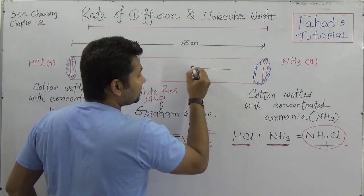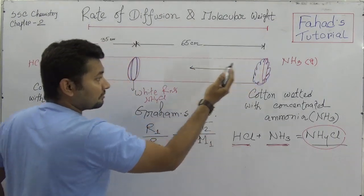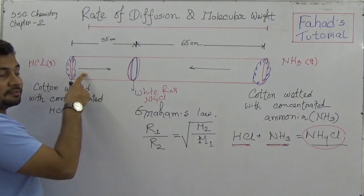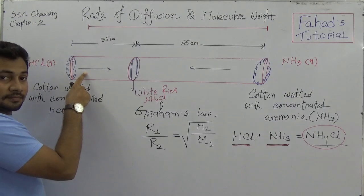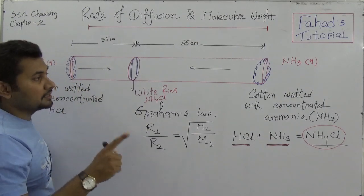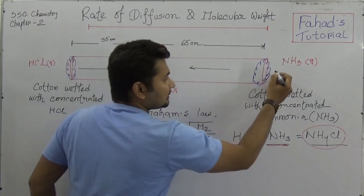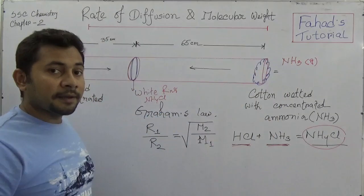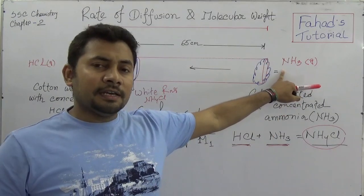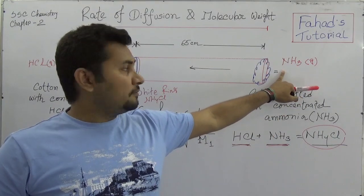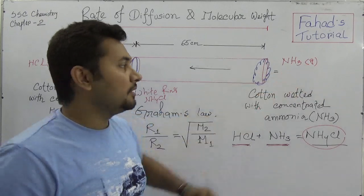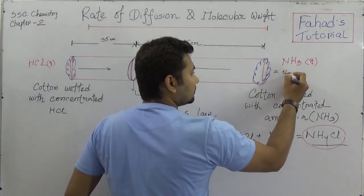What is important to notice is that the white ring forms at 65 centimeters from the ammonia end and 35 centimeters from the HCl end. The distance from ammonia is greater than the distance from hydrochloric acid — and this is because of the difference in molecular weight.